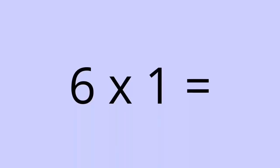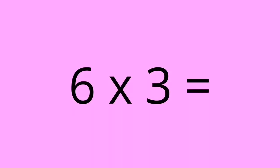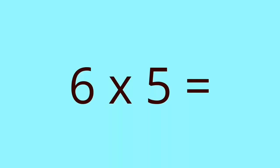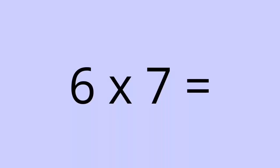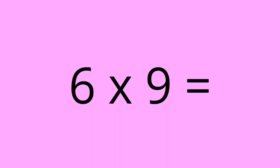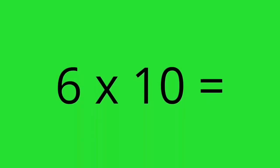6 times 1 equals 6. 6 times 2 equals 12. 6 times 3 equals 18. 6 times 4 equals 24. 6 times 5 equals 30. 6 times 6 equals 36. 6 times 7 equals 42. 6 times 8 equals 48. 6 times 9 equals 54. 6 times 10 equals 60.